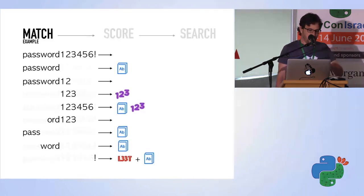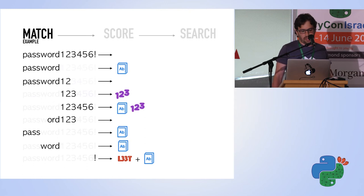Let's take a look at our example. We try to match each one of these substrings. Some of them, as you can see, match to the dictionaries, like password and 123456. Some match to sequence, some match to both, of course.